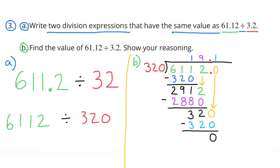B. Find the value of 61 and 12 hundredths divided by 3 and 2 tenths. I decided to make both the divisor and the dividend a hundred times bigger: 6,112 divided by 320. How many times does 320 go into 611? It goes in once. 1 times 320 is 320, and the difference is 291. Bring down the 2 in the ones column.